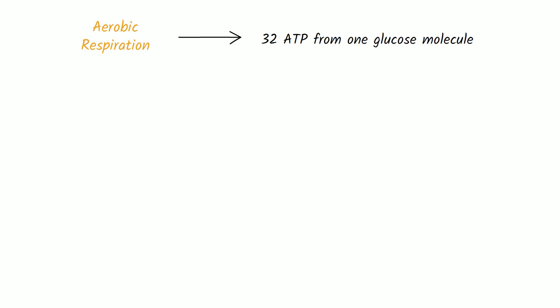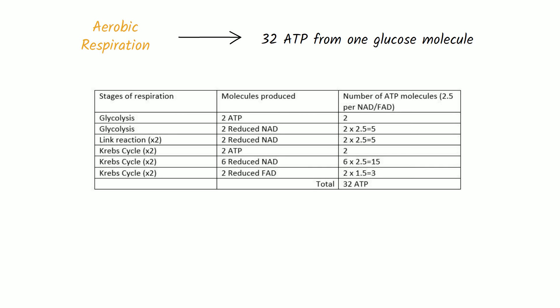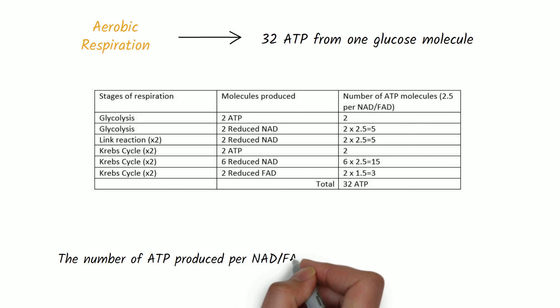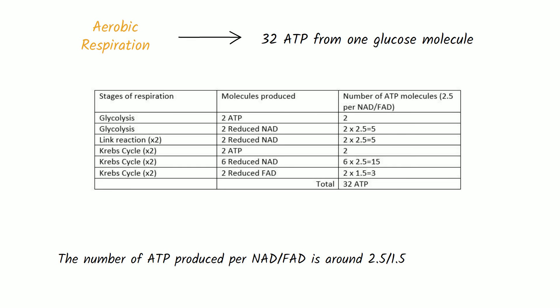The table summarises the molecules produced at each stage of aerobic respiration and the conversion of ATP. Research has found that the number of ATP produced per NAD or FAD is around 2.5 to 1.5. Glycolysis produces two ATP and two reduced NAD. The link reaction, times two for the two pyruvate molecules, produces two reduced NAD. The Krebs cycle, also times two, produces two ATP, six reduced NAD and two reduced FAD. This gives a total of 32 ATP produced in aerobic respiration.